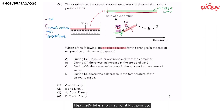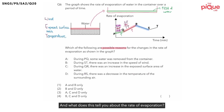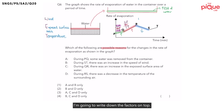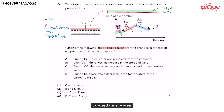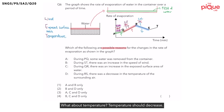Next, let's take a look at point R to point S. Did the line increase or decrease? The line decreased, so the rate of evaporation decreased. Same thing — I write down the factors on top and cancel out exposed surface area. To decrease the rate of evaporation, wind speed should decrease and temperature should decrease.